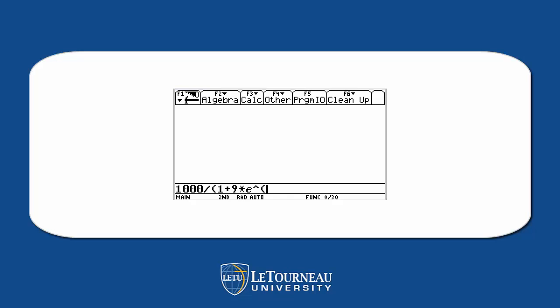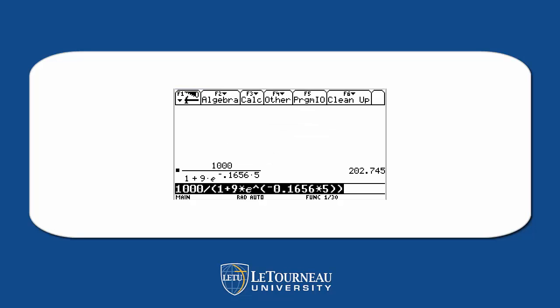We're keying our formula in: 1,000 divided by 1 plus 9 times e to the minus 0.1656 power, times our five years. They gave us that formula. After fixing a missed parenthesis, in five years our population is only going to be 102.7 — evidently we've got a declining population.